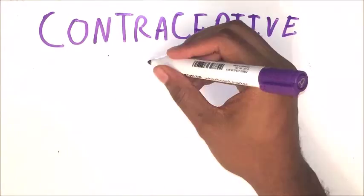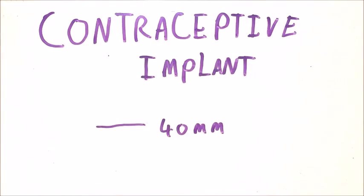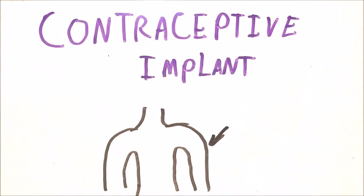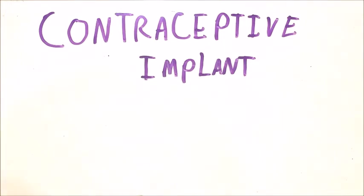The contraceptive implant is a small rod that contains progestogen. It is inserted subdermally using local anesthetic into the upper arm. It lasts for about three years but can be removed at any time by the doctor, and once removed, fertility should return fairly quickly. Unlike the injection, there is no loss of bone density.